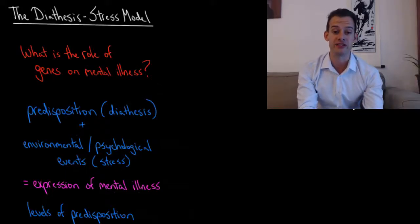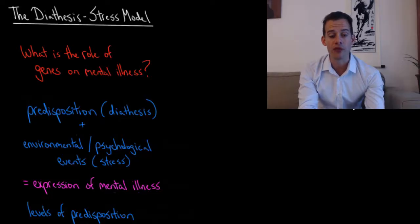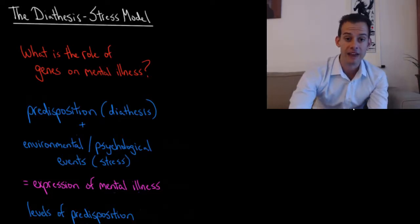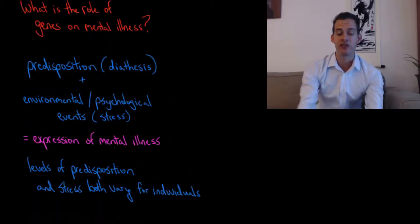In this video we're going to talk about the diathesis stress model. This is a model that helps us to answer the question of what the role of genes is in the development of mental illness. The diathesis stress model proposes that there are two main factors: a diathesis and stress.